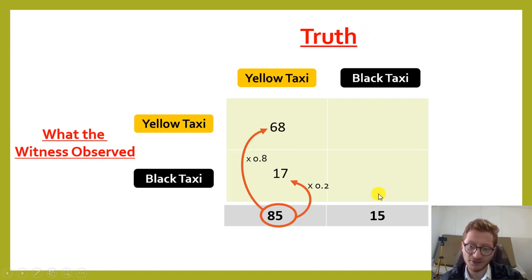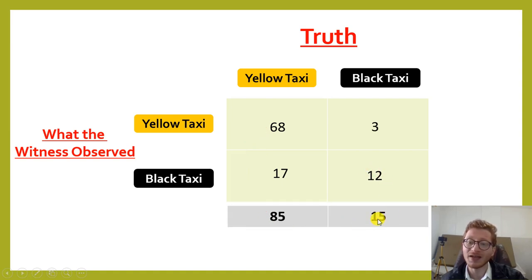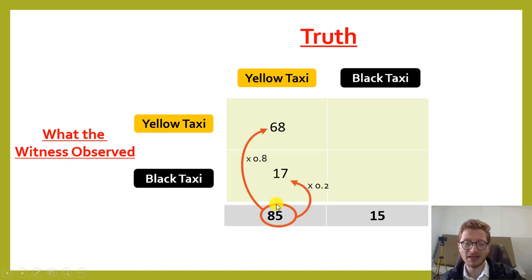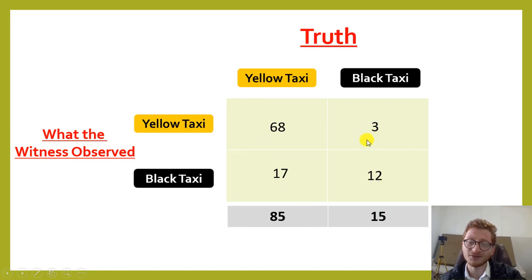Let's apply the same thing to the black taxis. If we have 15 black taxis, how many will he identify as black? He will say 80 percent were black: 0.8 times 15 equals 12. The leftover 20 percent — which is 3 — will be identified as yellow taxis. So we get this complete table.